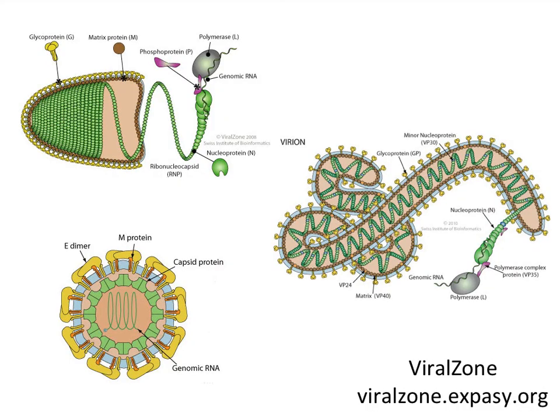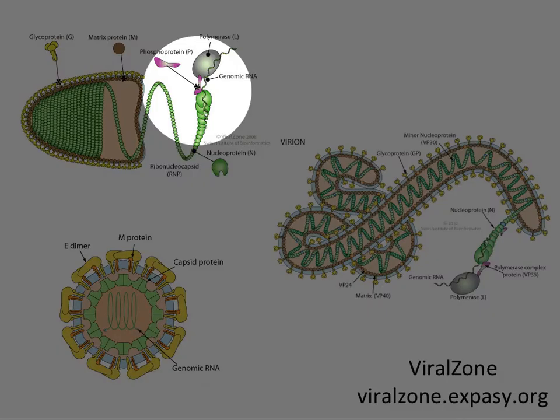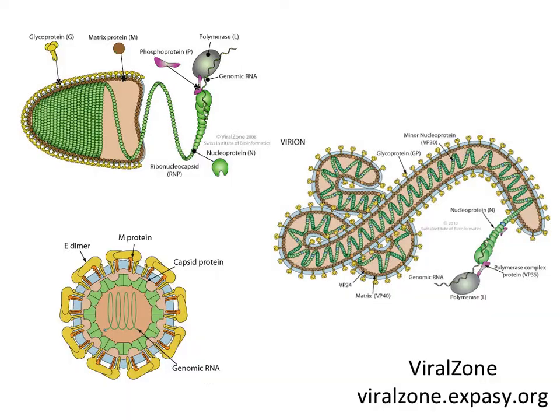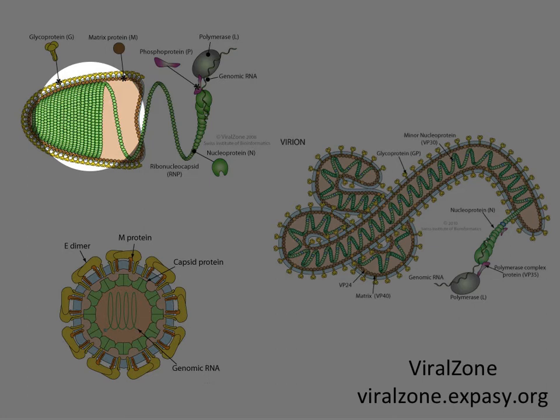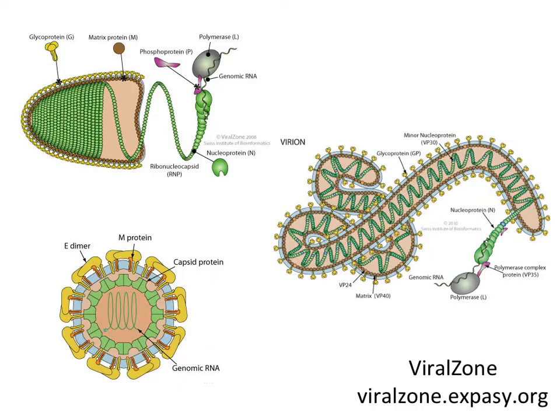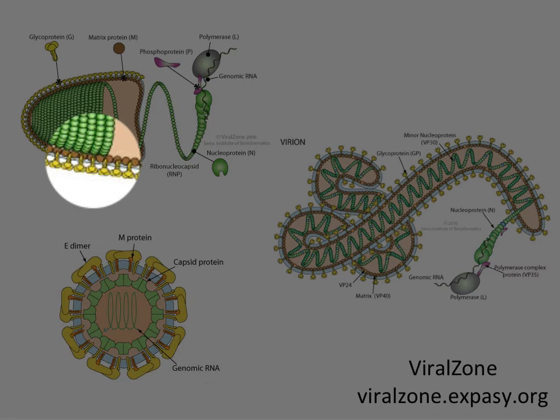Here are some examples of envelopes on virus particles. On the upper left is a rabies virus. The genome is a nucleocapsid — RNA plus protein — with a single RNA interacting with many copies of the nucleoprotein. It forms a helical structure. Those are all wrapped up inside an envelope in a bullet shape, with the envelope surrounding the nucleocapsid.